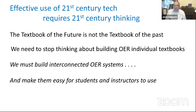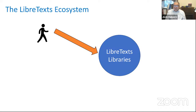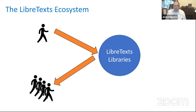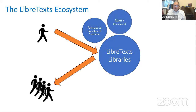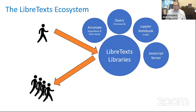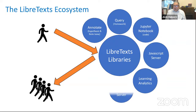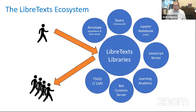Here's our faculty member, there's our library, and there are the students. We have surrounded our libraries with an annotation system so students can annotate their texts — either privately or in an open way so everybody sees it and a discussion starts. We're building homework systems. We have Jupyter Notebooks that enable actual computation within the LibreTexts. JavaScript servers do the same thing. We can provide learning analytics and correct things across the entire library with an automatic curation service. We have an LMS integration — a way of actually communicating with your LMS, so instead of going to LibreTexts, students can go to their LMS such as Blackboard, Canvas, or Moodle.